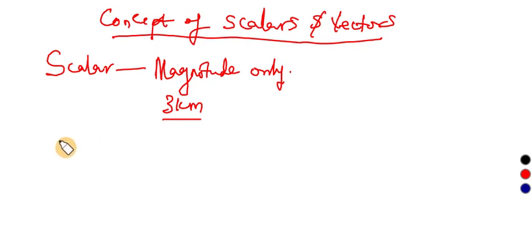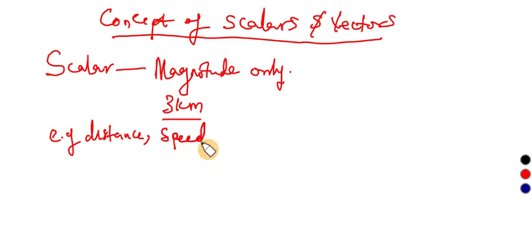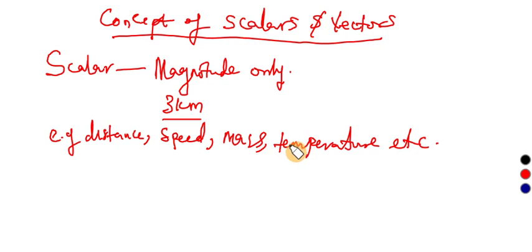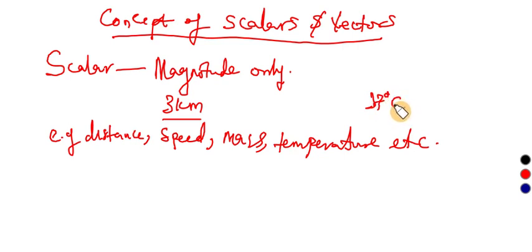Examples of scalar quantities include distance, speed, mass, and temperature. These quantities are scalar because they have magnitude only. For instance, you can't say that my temperature is 37 degrees Celsius to the west, or east, or 30 degrees to the south. It just shows magnitude — 37 degrees Celsius — with no direction.